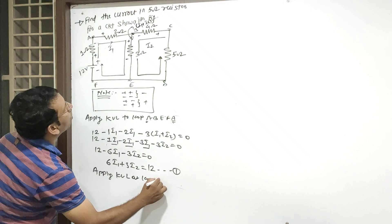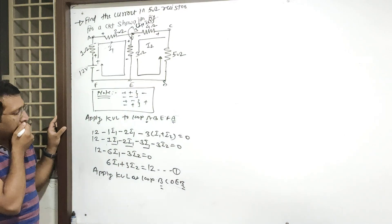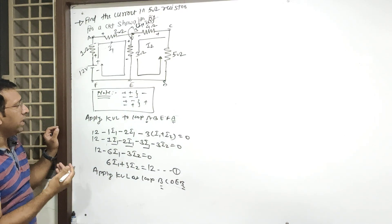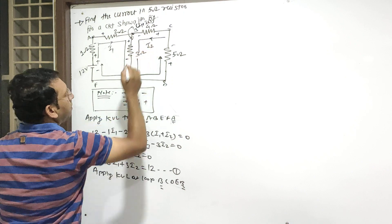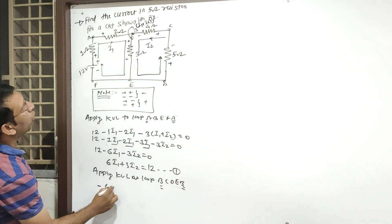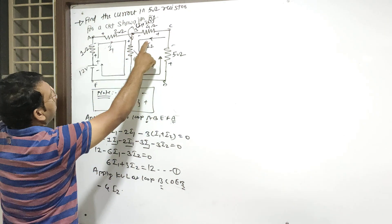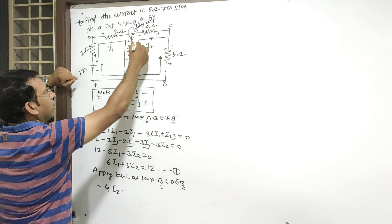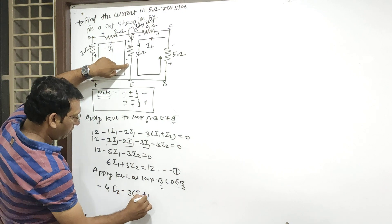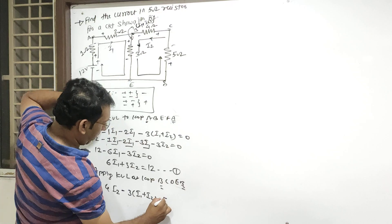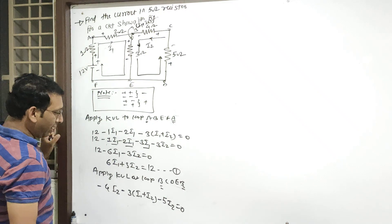Apply KVL at loop B-C-D-E-B — यह वाला loop है। चलिए देखिए — इसमें battery नहीं आएगी। यहाँ से ऐसे जा रहा — मतलब यह plus minus — और current इसी दिशा में जा रहा — तो minus 4 I2। Plus — देखिए, direction plus to plus जा रहा — मतलब current भी plus to plus — मतलब minus 3 (I1 plus I2)। फिर इधर से plus to plus — minus 5 I2 is equals to 0. Battery आया ही नहीं — चलिए इसको solve करते हैं।